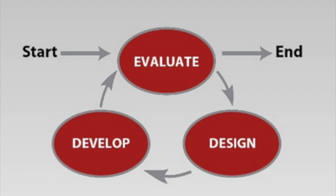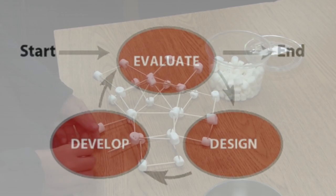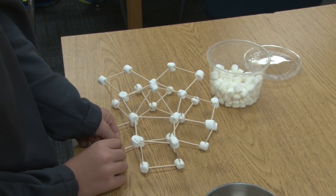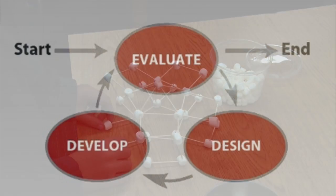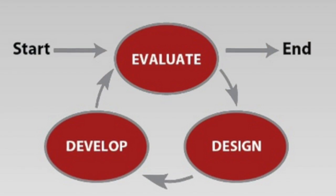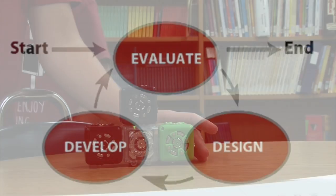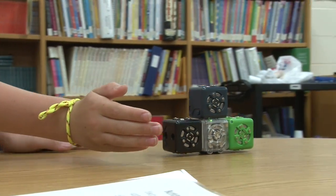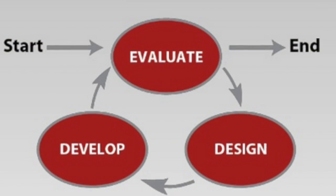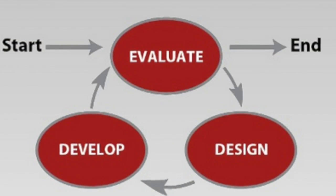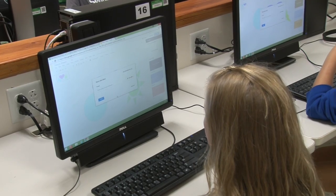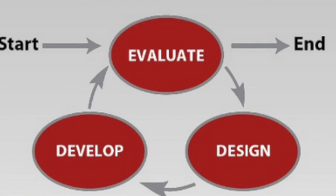SAM1 is a simple yet effective model for simple, small projects. The three steps in SAM1 are evaluation/analysis, design, and finally, development. This cyclical design ensures that students are consistently repeating all three steps throughout the project. No one step is more important than the other, which ultimately creates a more efficient and effective end product for students.